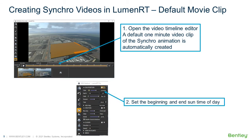Let's talk about how to create Synchro videos inside of Luminar-T. Basically, we import all of the Synchro animation directly into Luminar-T and then give you the ability to set camera points of view and to set the timeline. The first thing you want to do is open the Video Timeline Editor, and in it you'll notice there is a default one-minute video clip of the Synchro animation that is automatically created. Secondly, you want to set the beginning and end time of day, which allows you to set the sun and make sure the time of day is exactly how you want it.